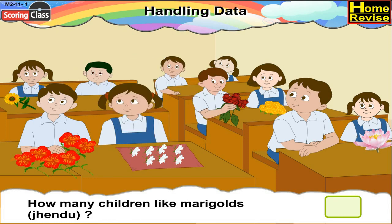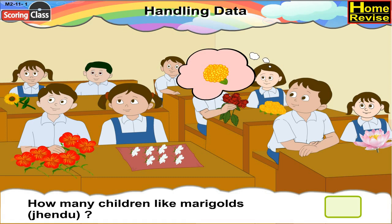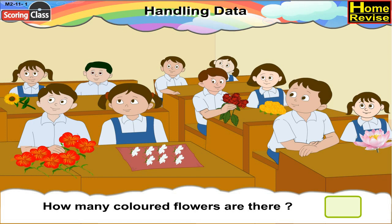How many children like marigolds or chandu? One child likes chandu or marigold. So write one in the box. How many colored flowers are there? Six colored flowers are there. So write six in the box.